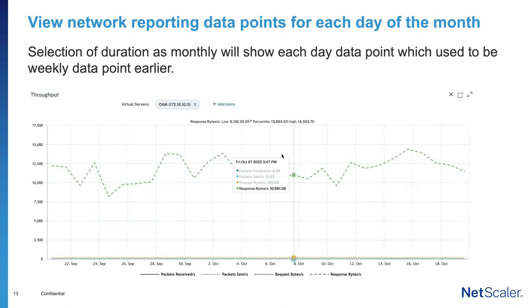Second, you can now view network report data points for each day. This is a monthly report for bandwidth utilization. Earlier it was averaging out for a week, so values within a week could get averaged. Now each data point covers an entire day averaged — so you see individual daily data points, for example days 6, 7, 8, 9 — covering the entire day's data for a full month.